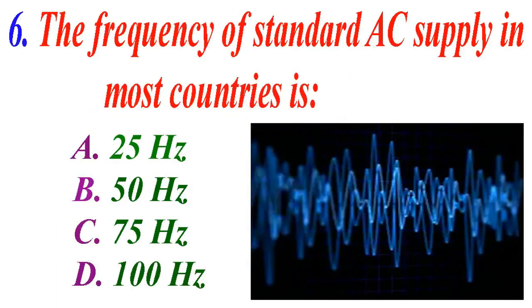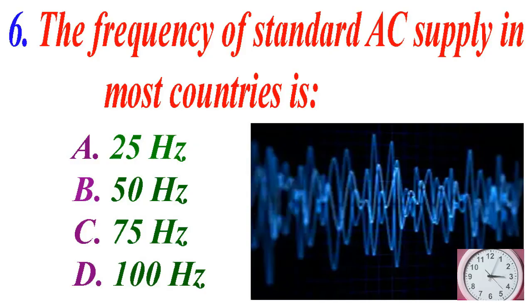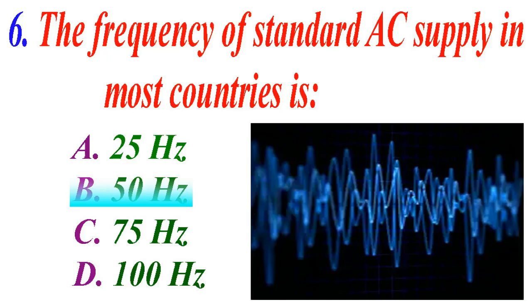The frequency of standard AC supply in most countries is: A 25 hertz, B 50 hertz, C 75 hertz, D 100 hertz. The correct answer is B, 50 hertz.